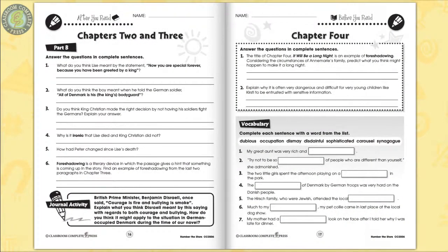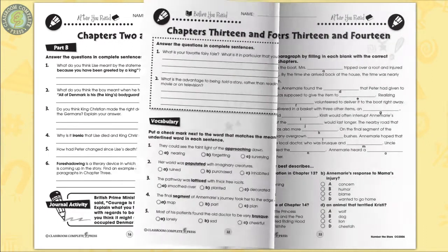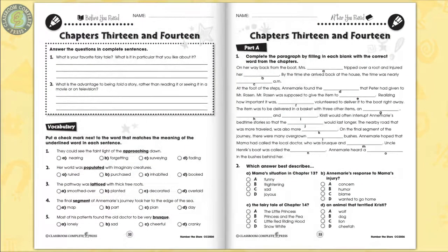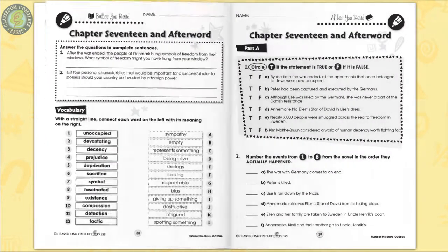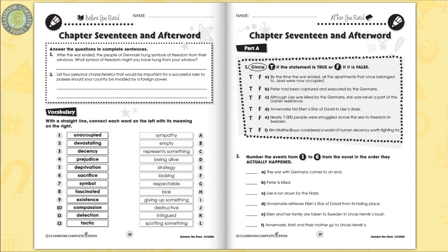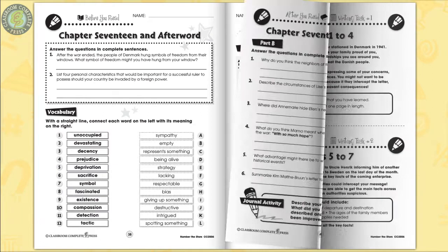Find examples of foreshadowing in the story and explain what it may be hinting at. Match vocabulary words to their underlined synonyms in the sentences. Put events at the end of World War II in order that they happened in the novel.